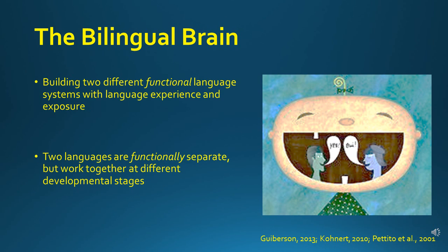Although bilingual learners share a common brain-based system for learning two languages, when using two languages they have two language systems that are functionally separate. The child's language experiences and exposures at home, school, and in the community are slowly developing their language. Bilingual children know when to speak a certain language and to whom. However, the two language systems also work together at different language learning stages throughout development — for example, knowledge of one language may help us learn sentence structure or grammar in another language. The child uses the same language foundation to continue learning throughout their development.